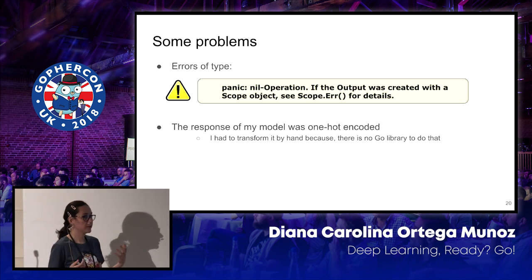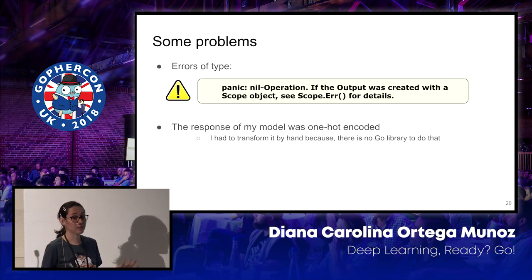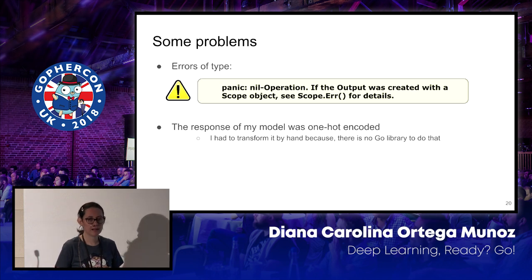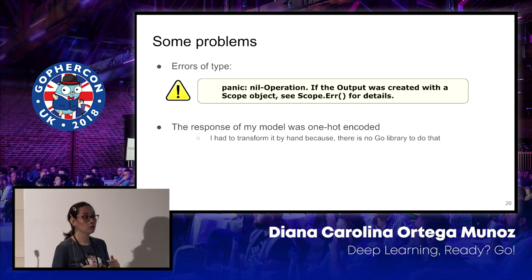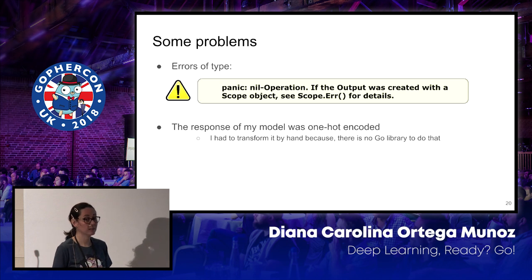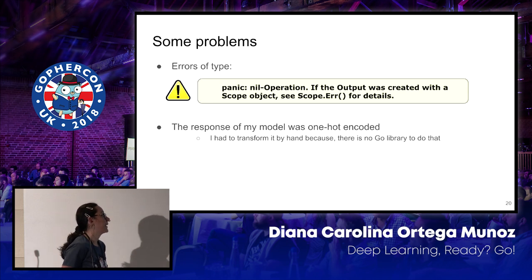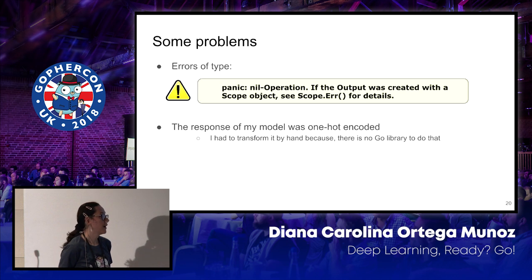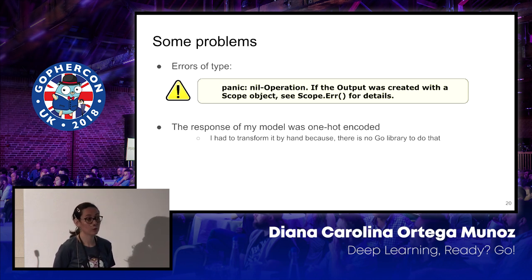I could execute my model. But during the process I had some errors. Maybe not very explicit errors, but if you work with the framework you get used to them. One error was when I tried to use a tensor that does not exist. The other thing is that the response of my model was in CTC encoding — a special encoding — so I had to transform it by hand. There is nothing in Go that could help me do that, but it's not difficult.